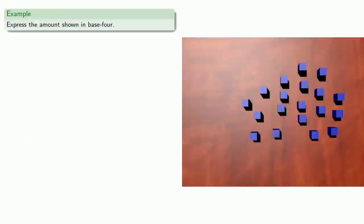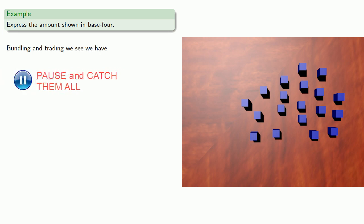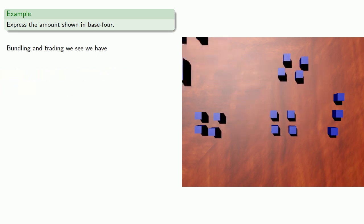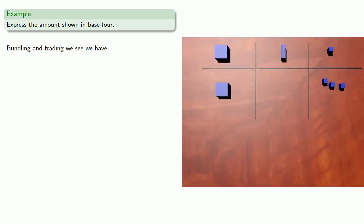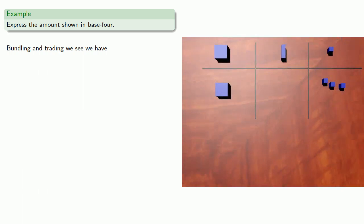So let's say we want to express the amount shown in base 4. So bundling and trading sets of 4. And we have another set of 4 we can trade. We can organize these on our place value chart. And so bundling and trading, we see that we eventually have 1 large, 0 medium, and 3 small. And so we write this as 1, 0, 3, base 4.